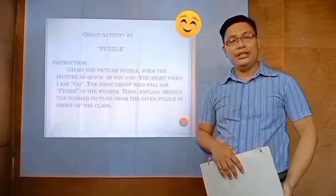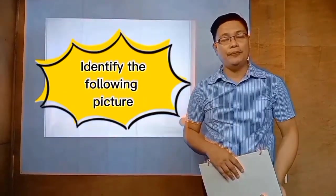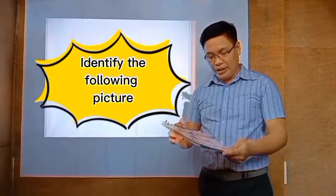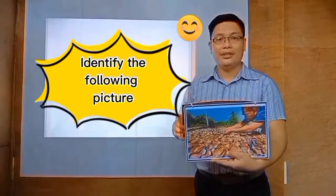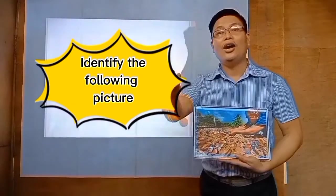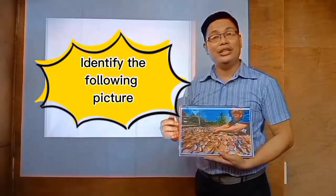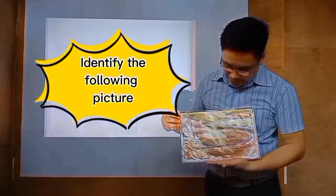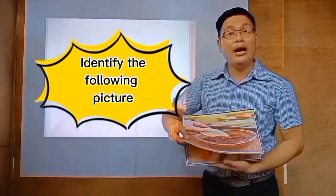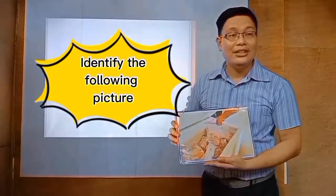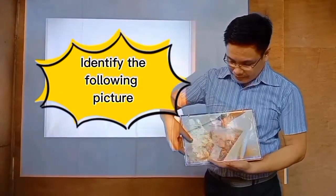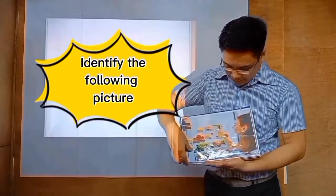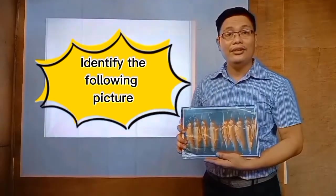For our next activity, identify the following pictures. You may raise your hands when you want to answer. I have here the different methods of food preservation. What kind of food preservation is this? Oh Marie, very good, this is drying. How about this one? Super, this is salting. How about this one? Beth, freezing. Next, Shasha, refrigeration. Next one, smoking.